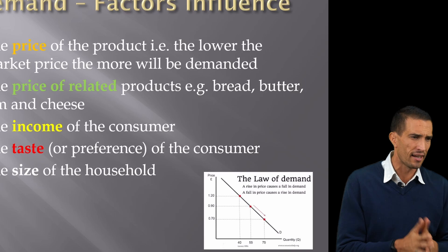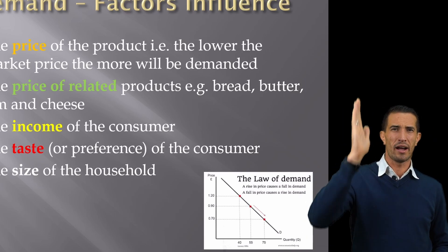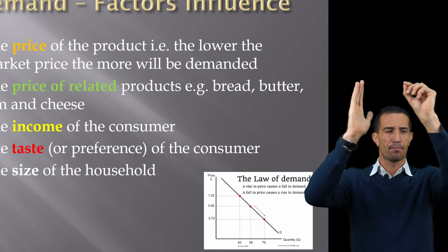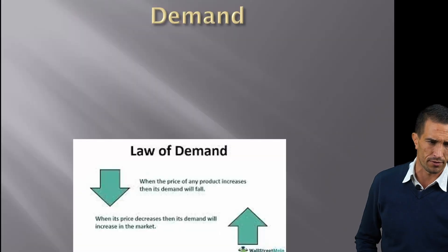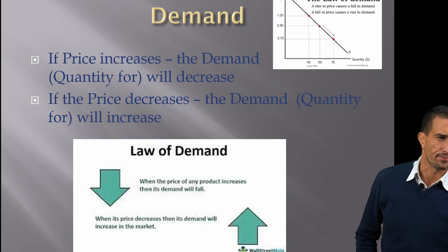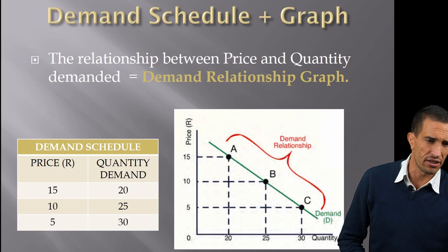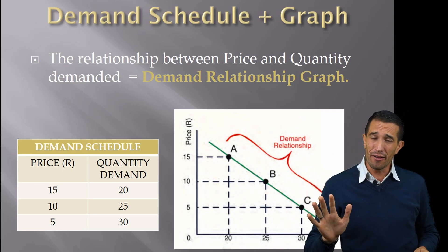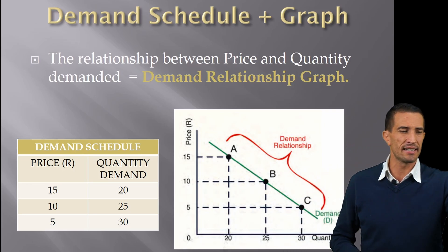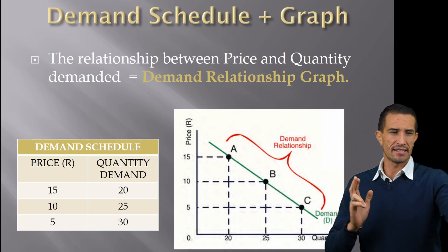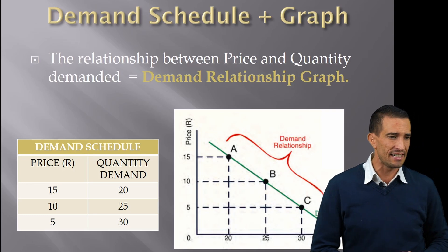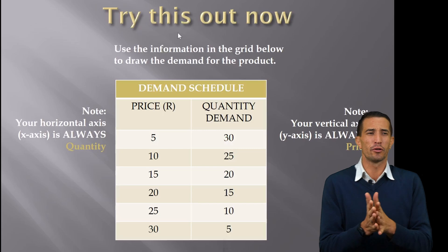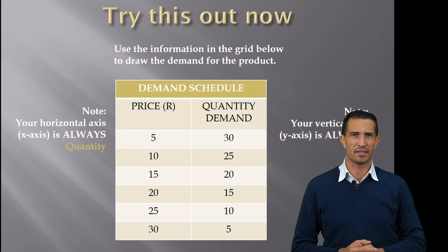Looking at the graph, the y-axis is always your price and the x-axis is your quantity — as price goes higher, quantity goes lower, showing the law of demand. The demand schedule shows: at 15 Rand I demand 20 units; at 10 Rand, 25 units; at 5 Rand, 30 units. You draw the line through those points — A, B, and C. There's also a practice example for you to try at home, and we'll draw it together in a follow-up video.